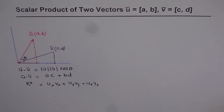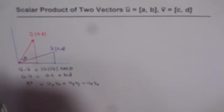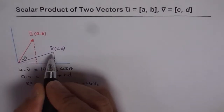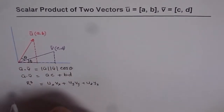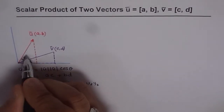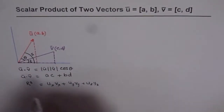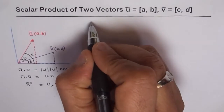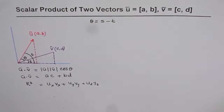In this video, we will show how these two formulas are exactly the same and give the same result. Let us say the angle that vector V makes with the horizontal is T, and the angle that vector U makes with the horizontal is S. In that case, theta equals S minus T — that is the angle between the two vectors.